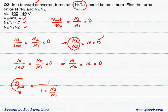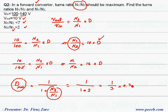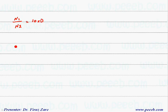In order to have maximum duty cycle, this turns ratio should be minimum, and the minimum value is 2 according to this condition. So the minimum turns ratio is 2, meaning the maximum duty cycle is 1 over 3, or approximately 0.33. We found that N1 over N2 equals 10 times the duty cycle, and for the second case with input voltage fluctuating between 100 and 140, it equals 14 times the duty cycle.